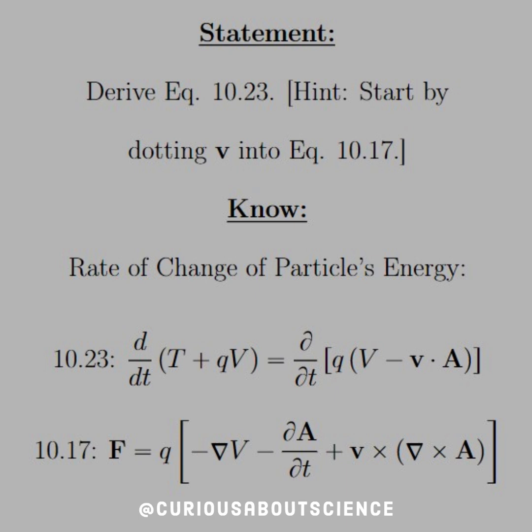Now, our hint requires us to use 10.17, which is F equal Q, and then for E, we just put in the potential formulation, and v cross B, we put in the curl of A. All right, so, let's just dive on in. It should be quick and easy.